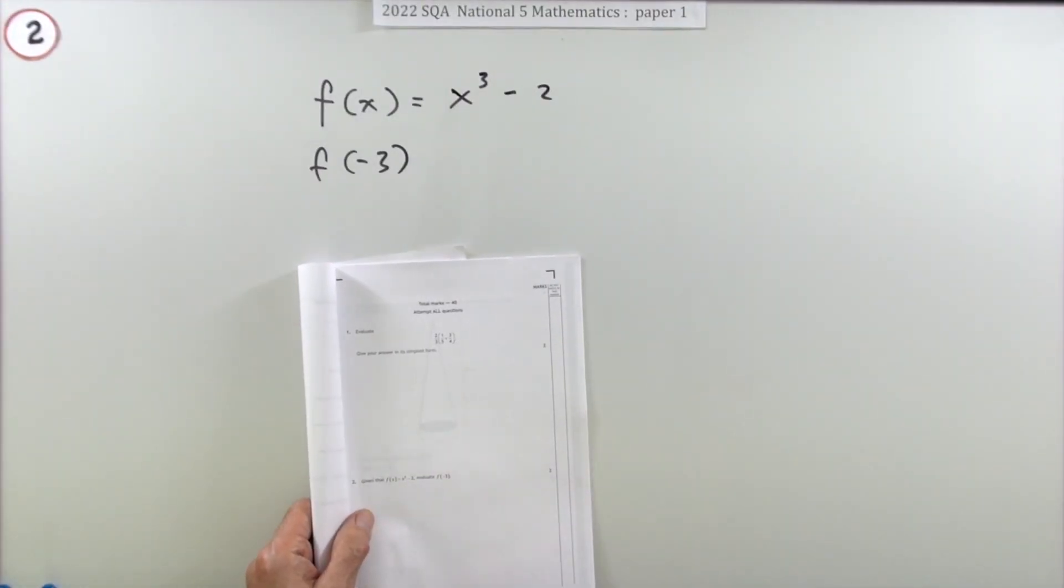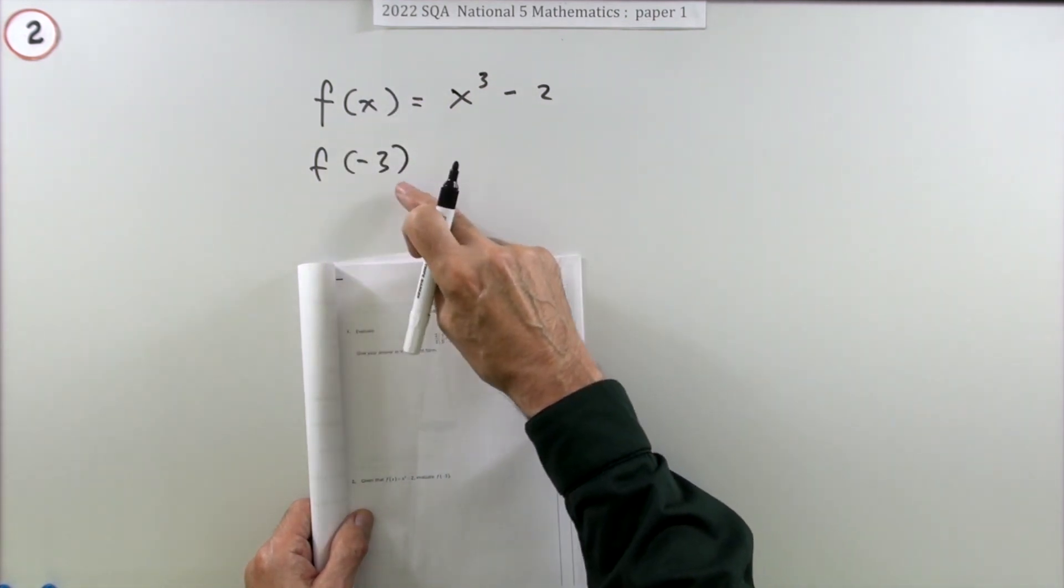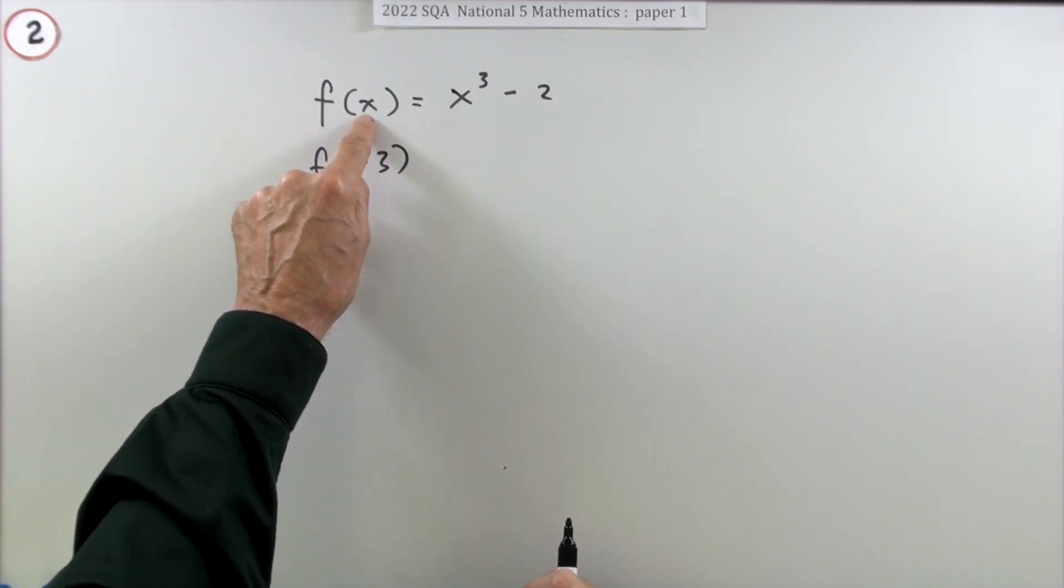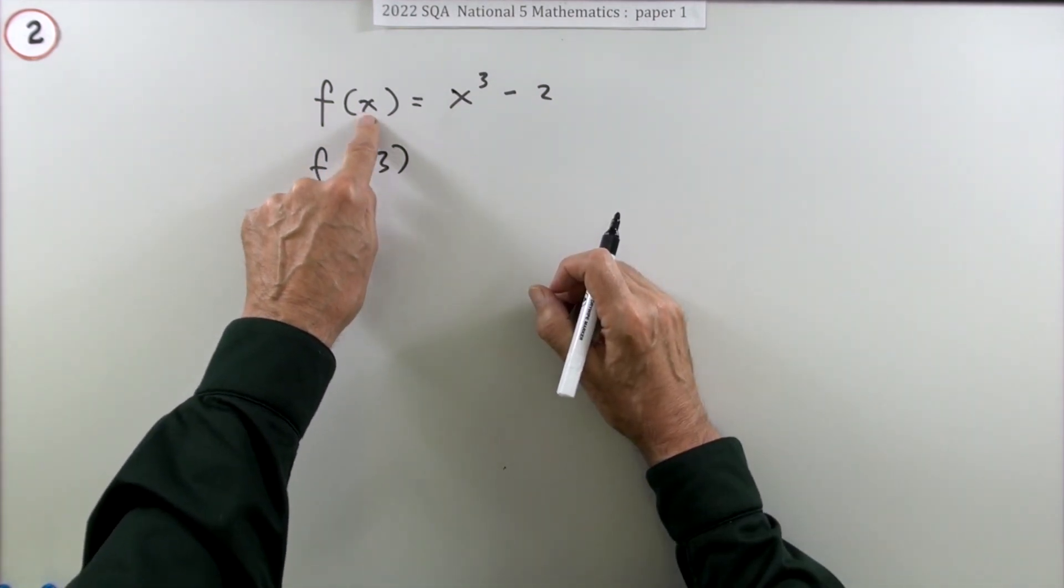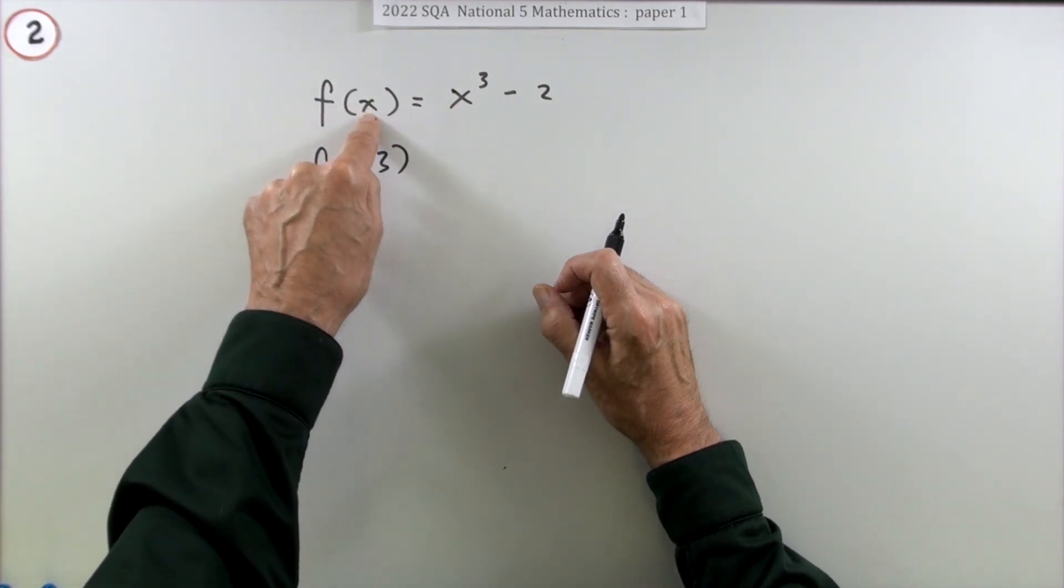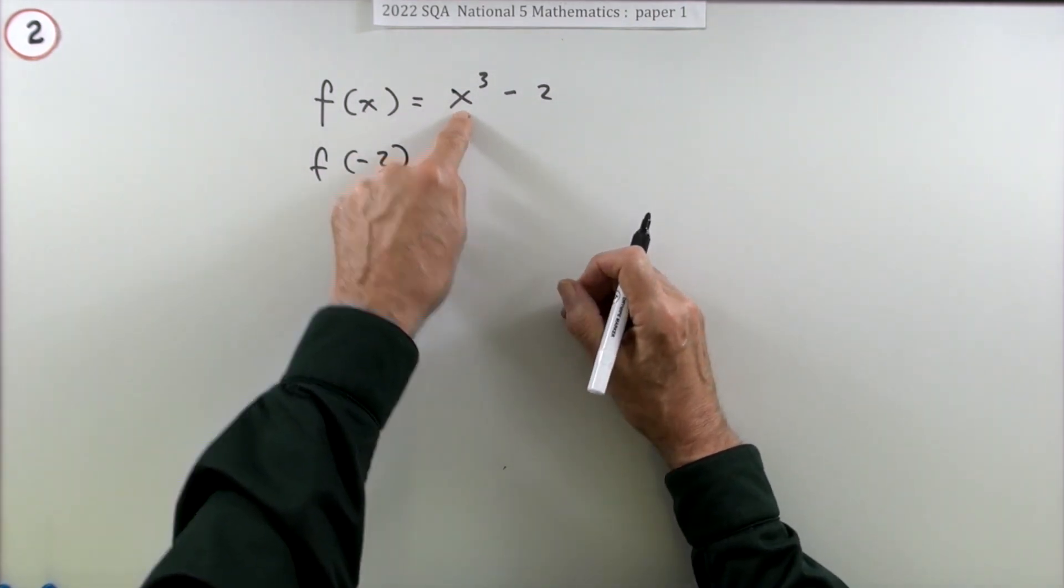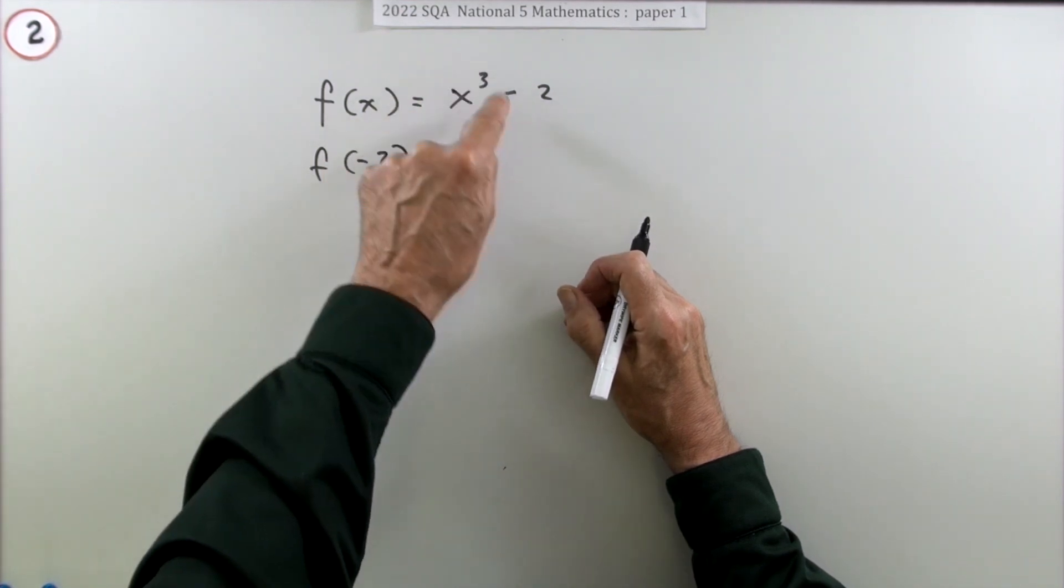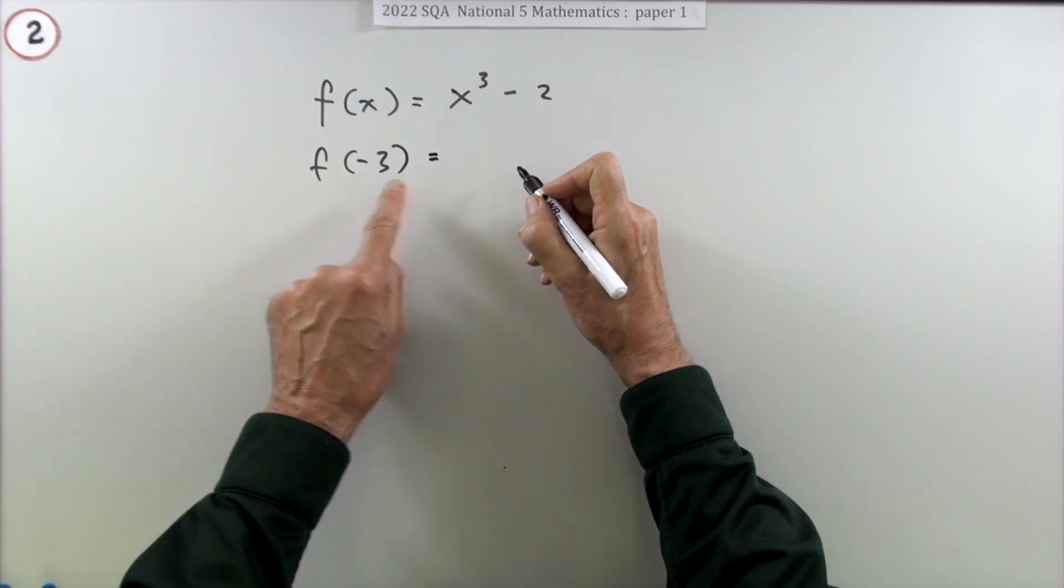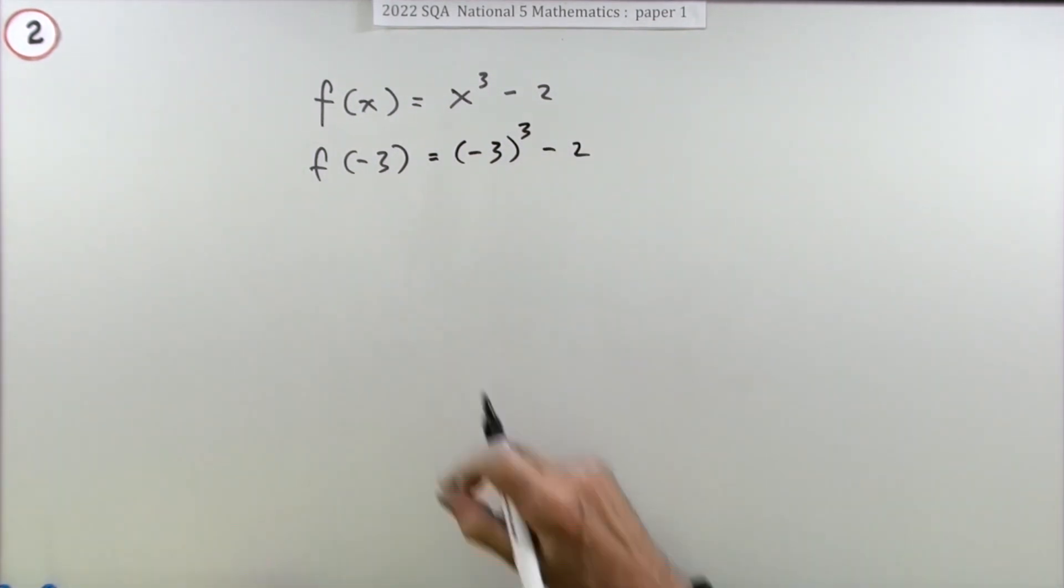And so on to number two. Again, just for the two marks: given that f(x) is x cubed minus two, evaluate f of negative three. Well, that x is really just there for the sake of putting something down. It's just like a placeholder. It just stands for whatever you care to put in. So this just says whatever you put in, you take it, cube it, and take away two. So if you actually put in a negative three, it means you put the negative three into this, cube it, and take away two.